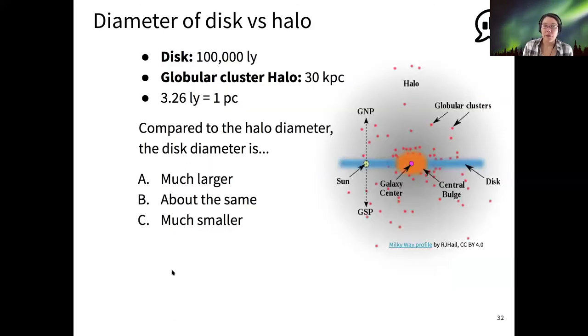If we think about the size of the disk is 100,000 light years diameter and Shapley's measurement of the galactic cluster halo was 30 kiloparsecs, here's a problem for you. So going back to unit conversions, we know that for every 3.26 light years, that's how many light years are in one parsec. So when you compare to the halo diameter, is that much larger, about the same, or much smaller than the disk?